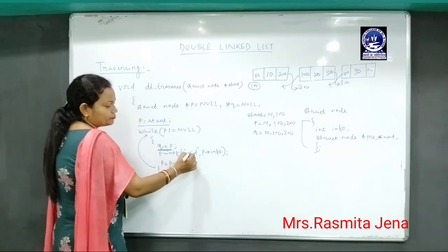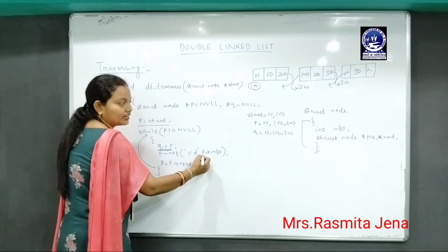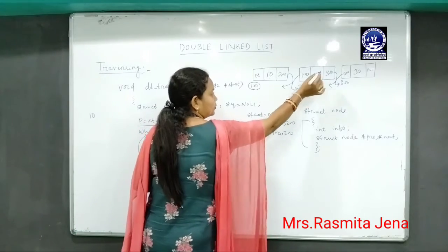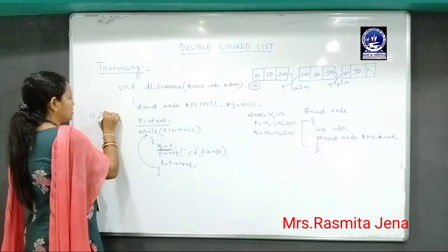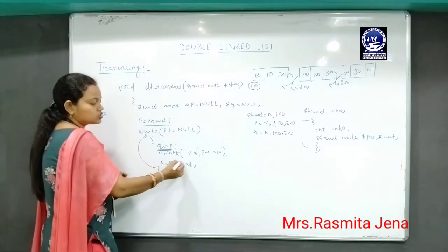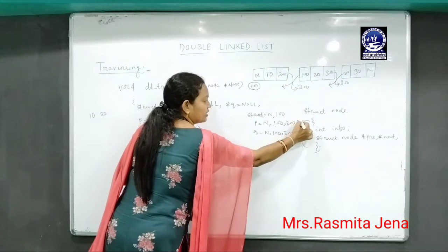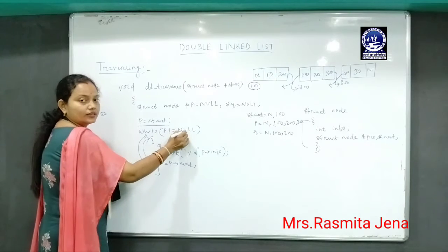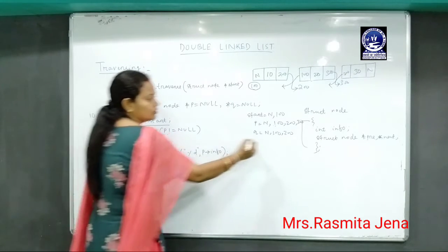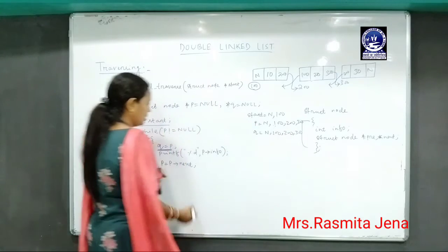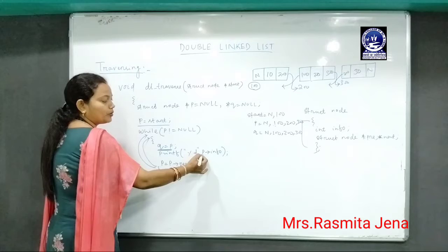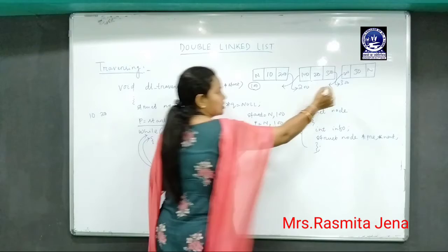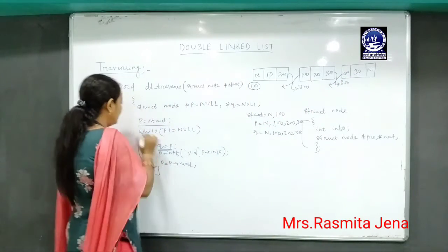Then printf with p->info: since p contains 200, the info part of 200 contains 20, so it prints 20. Then p equals p->next, so p becomes 300. Again checking the condition: 300 is not equal to null, condition is true. q equals p, so q contains 300. Then printf p->info: since p contains 300, the info part of 300 is 30, so it displays 30.